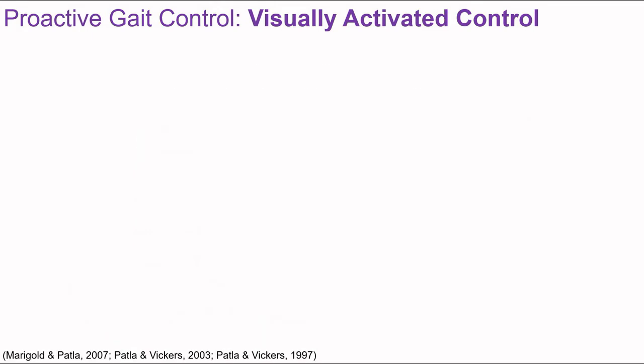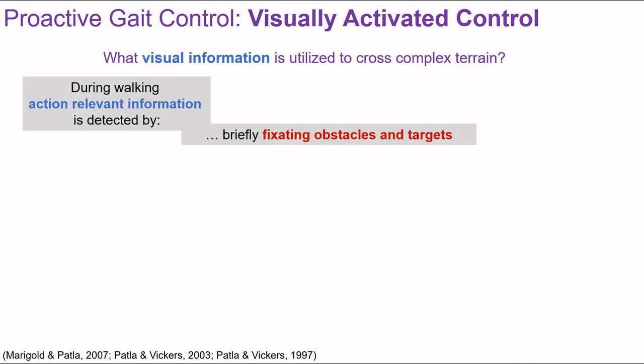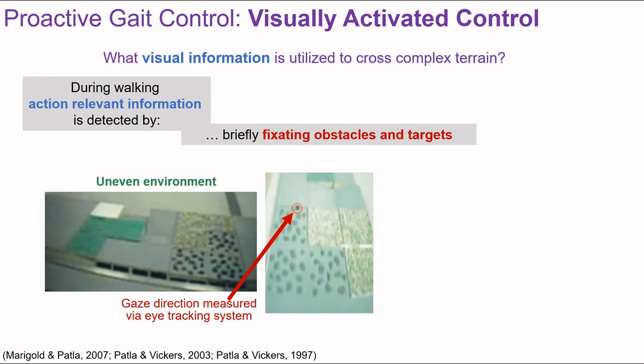We know that vision is used for adapting gait to variations in terrain. What visual information is utilized to cross complex terrains? A series of studies by Aftab Patla showed that during walking, action-relevant information is detected by briefly fixating obstacles and targets. Participants traversed uneven terrain while an eye-tracking system recorded their gaze. The researchers observed that participants frequently looked in front of them at a distance of about two step lengths.